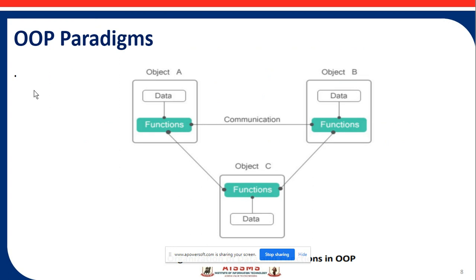Next is the OOP paradigm. Here we can see how objects communicate with one another. In the OOP paradigm, object A, object B, and object C are connected and communicate with each other through functions and their respective data sets. Each object contains its own data and respective functions, and they communicate with each other — this is the organization of objects in OOP.